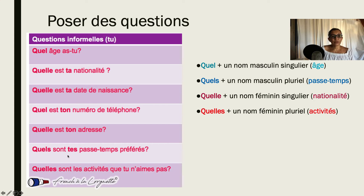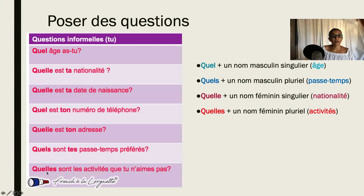Quels sont tes passe-temps? Un passe-temps — we know because there's no 'e' at the end, so we know that it is masculine. So masculin pluriel. Et quelles sont les activités? Activities is feminine, so quelles — féminin pluriel.